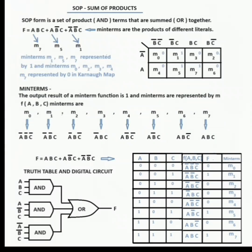SOP: Sum of Products. SOP form is a set of product terms that are summed together. For example, F equals ABC plus AB complement C plus A complement B complement C — these are minterms, and the minterm numbers are given here.